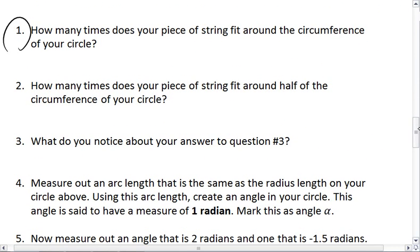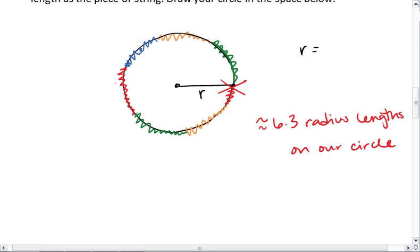Now, we want to determine how many times does your piece of string fit around half of the circumference of your circle. Well, if we do that, we end up with about 3.15 radius lengths.